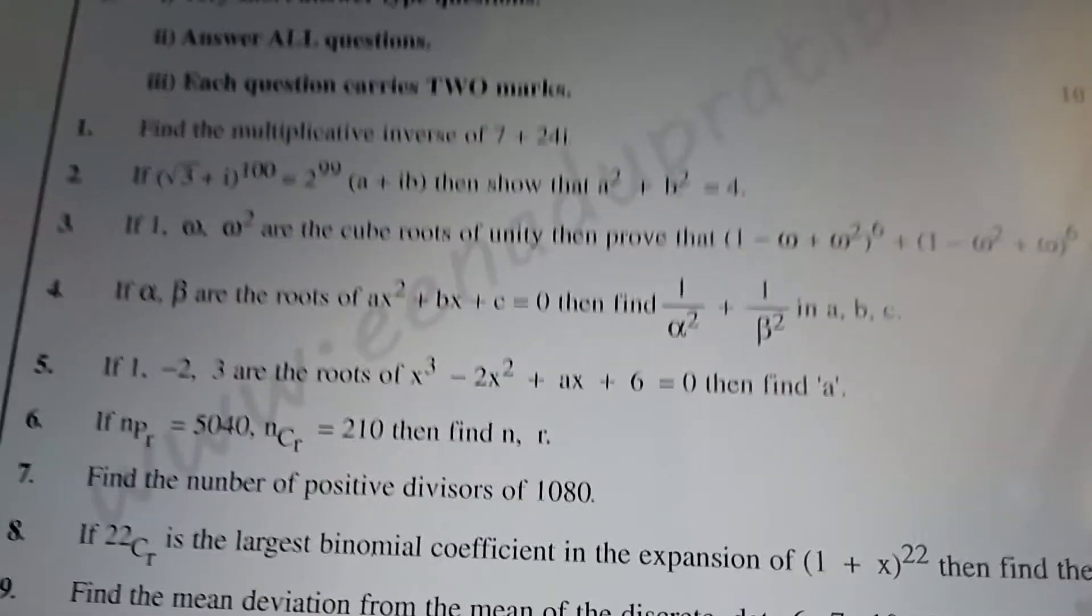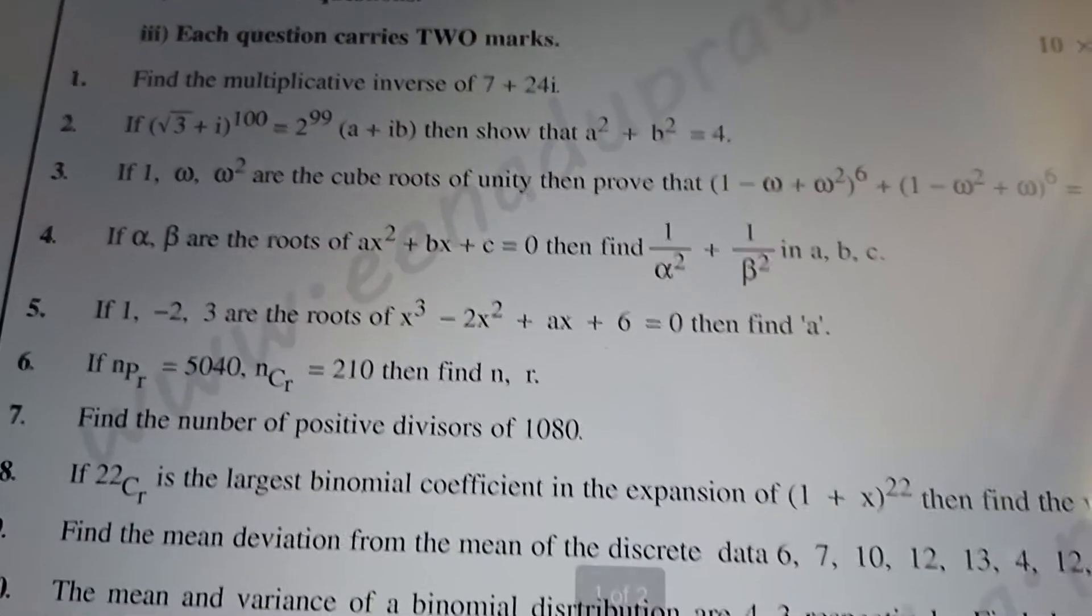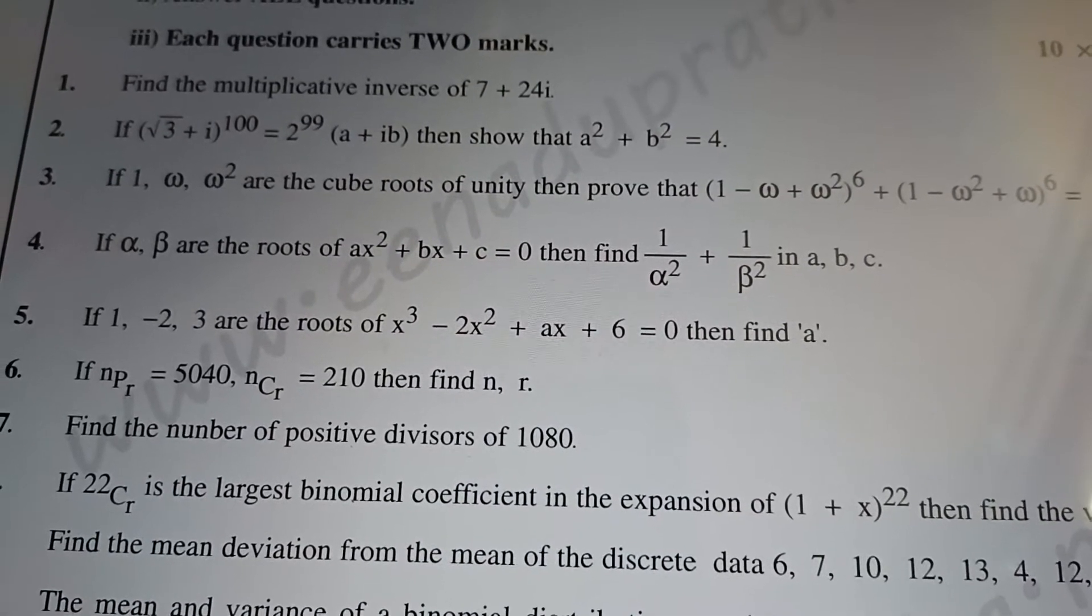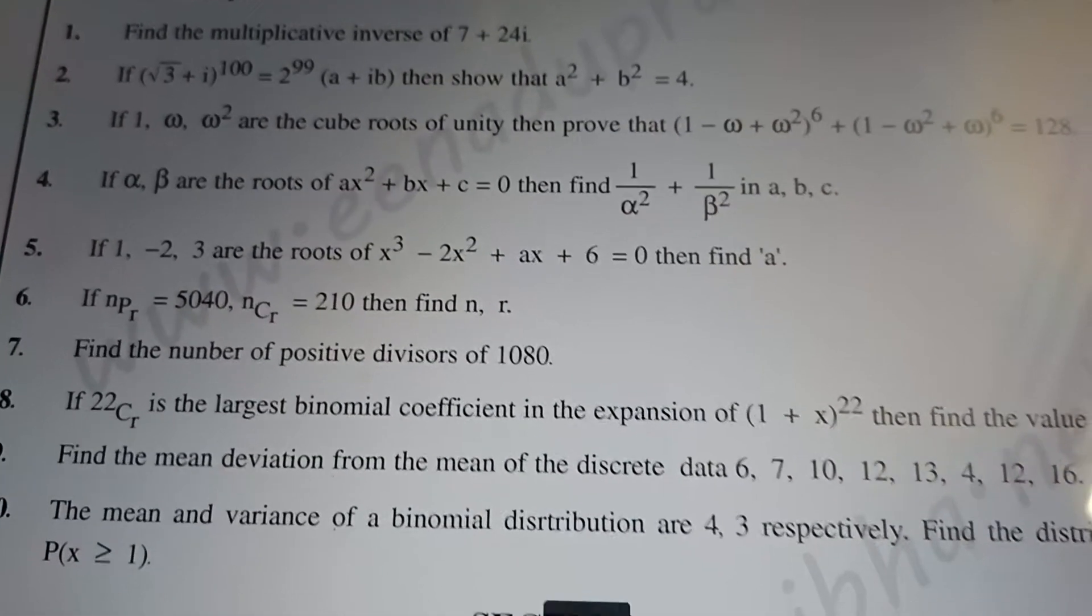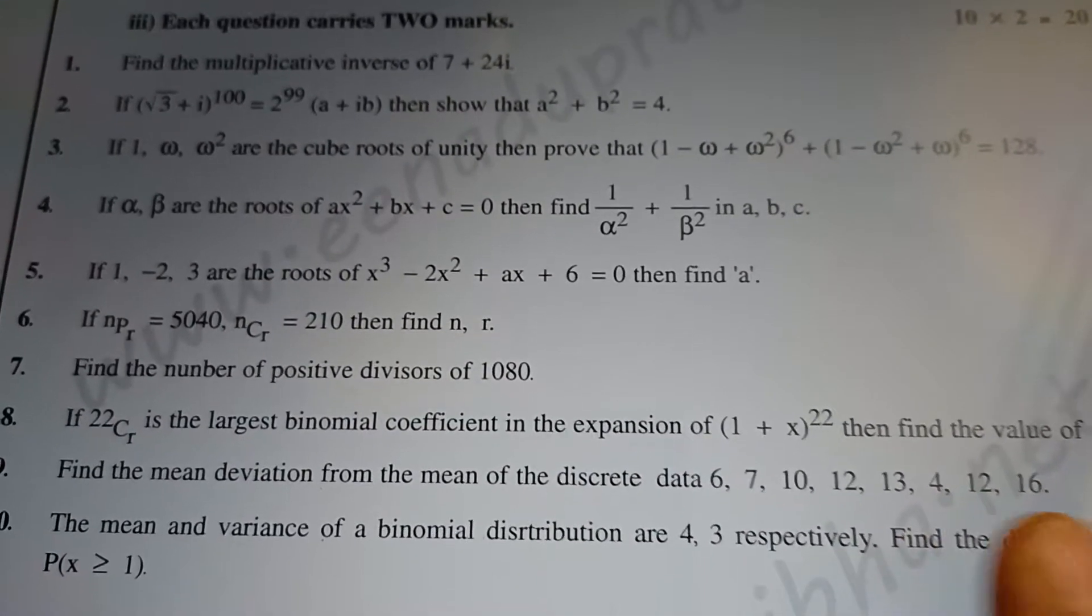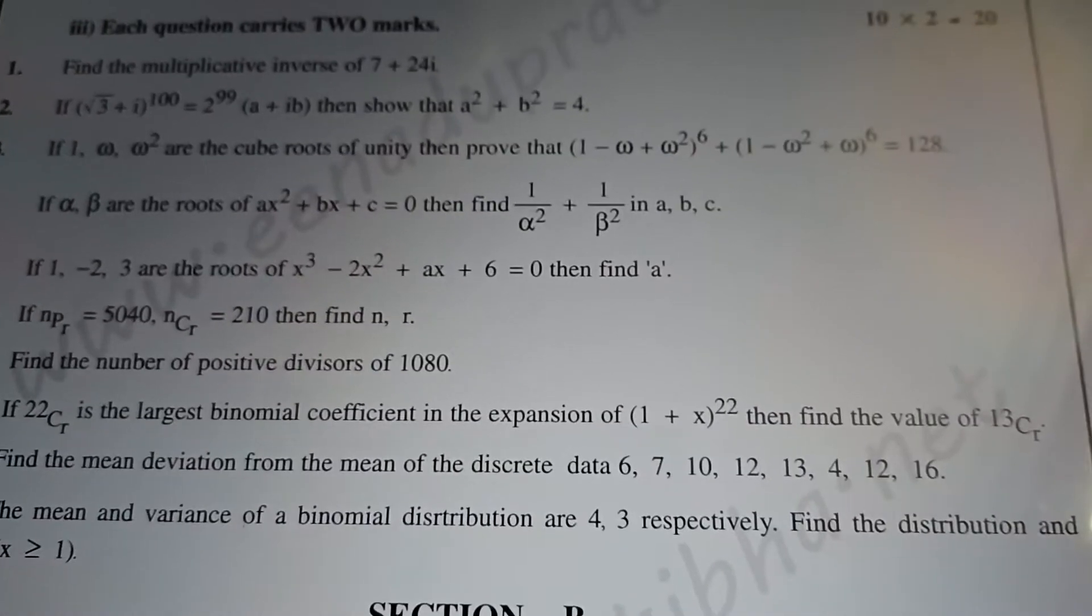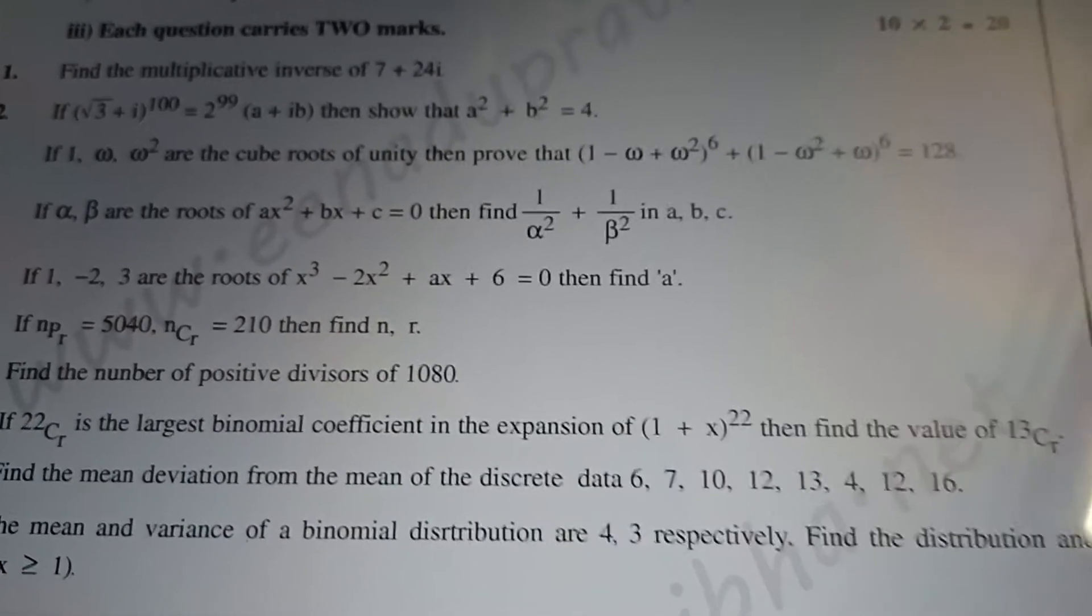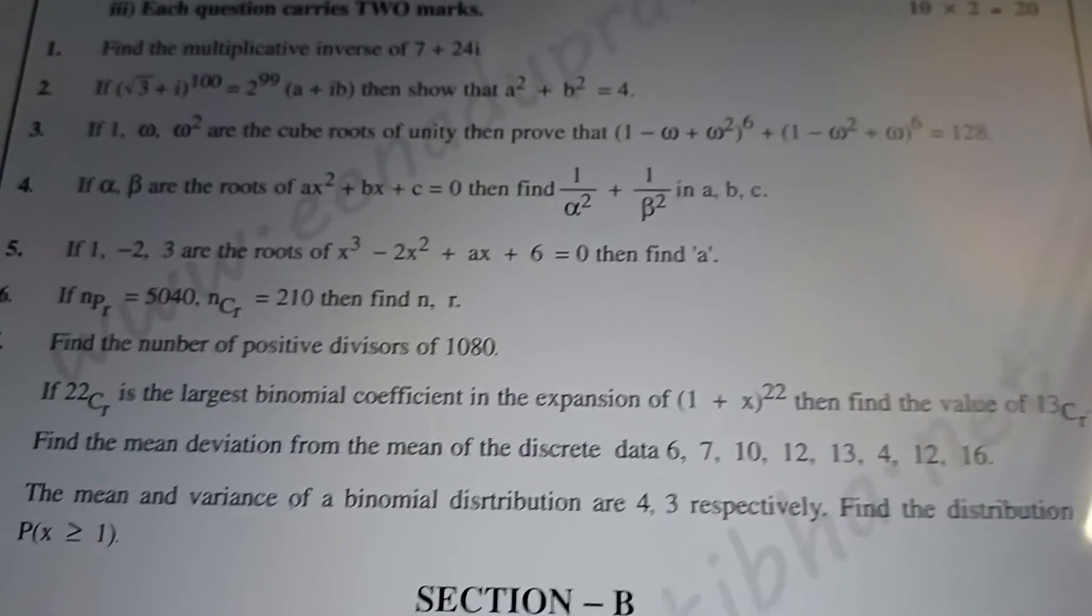Next, NPR equal to 5040 and NCR equal to 210, then find N and R. Find the number of positive divisors of 1080. 13CR the largest binomial coefficient expansion 1 plus x whole power 22, then find the value of 13CR.